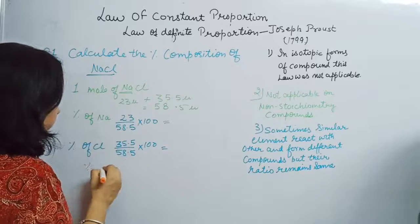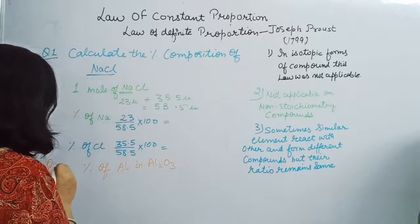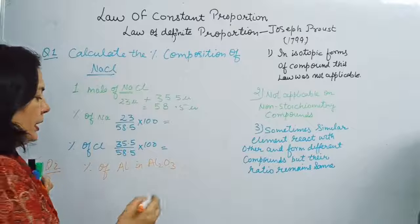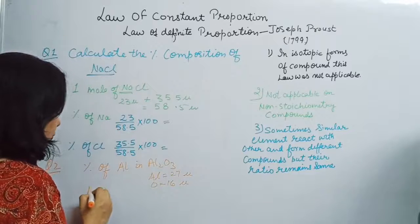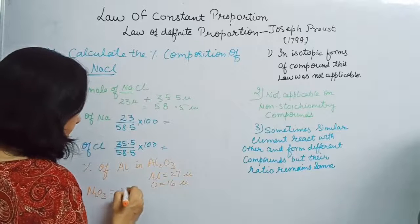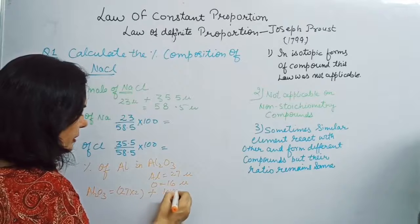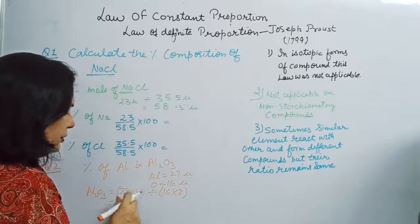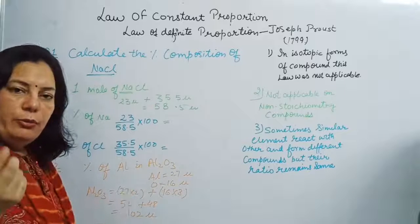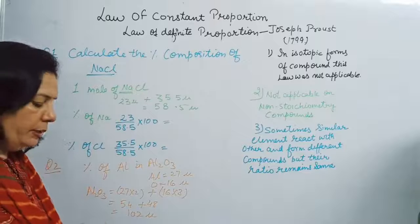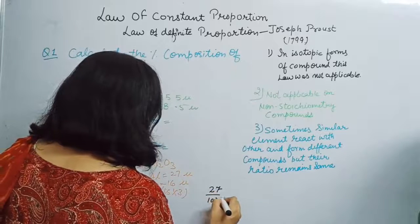In the same way, you can calculate the percentage of aluminium in aluminium oxide (Al2O3). The atomic mass of aluminium is 27 and oxygen is 16 units. Total mass of Al2O3 = (27 × 2) + (16 × 3) = 54 + 48 = 102 units. So one mole of aluminium oxide has a mass of 102 units.